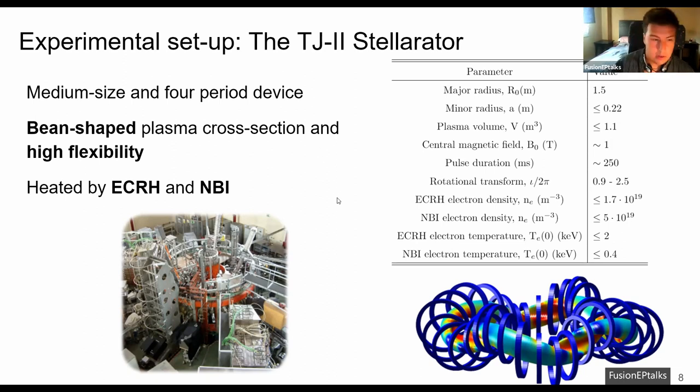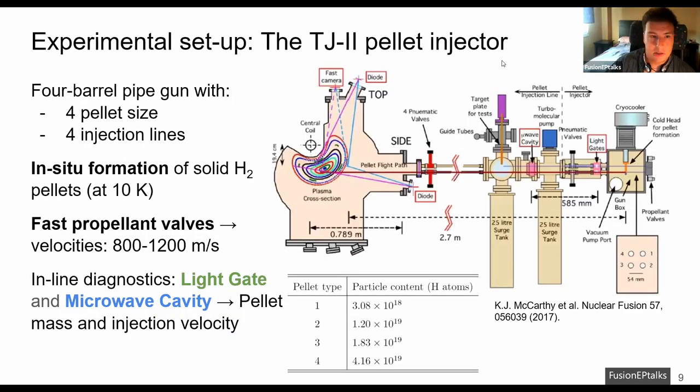The TJ2 stellarator has two main heating methods, the electron cyclotron resonance heating and the neutral beam injection. In addition, I use the TJ2 pellet injector whose schematic is shown here and it's a four-barrel pipe gun with four different pellet sizes and four different injection lines. It allows the in-situ pellet formation at 10 Kelvin thanks to the cryo cooler and the acceleration up to velocities of 1200 meters per second thanks to the propellant valves.